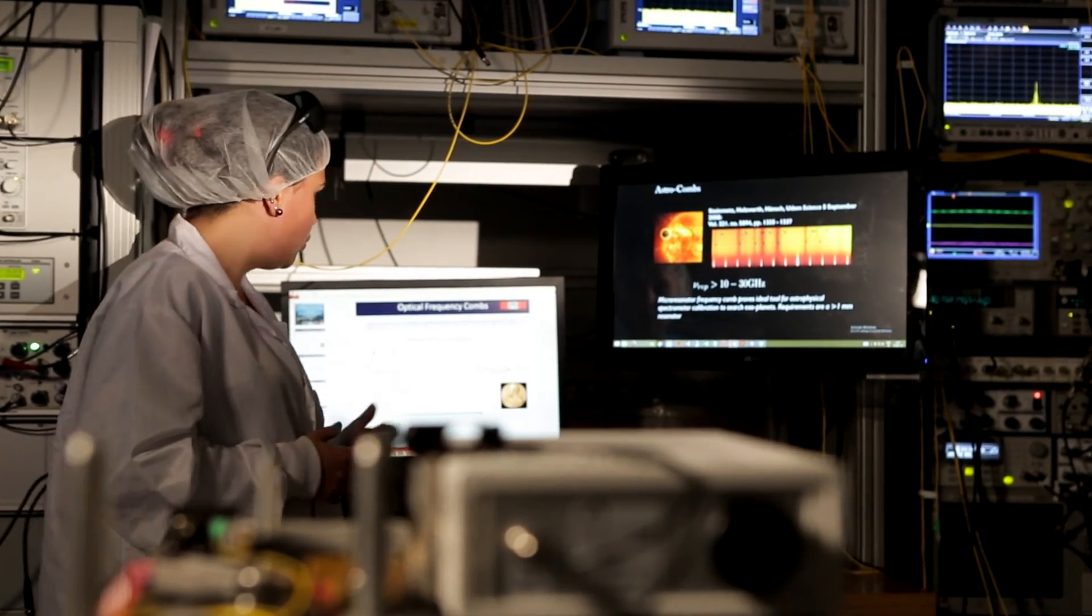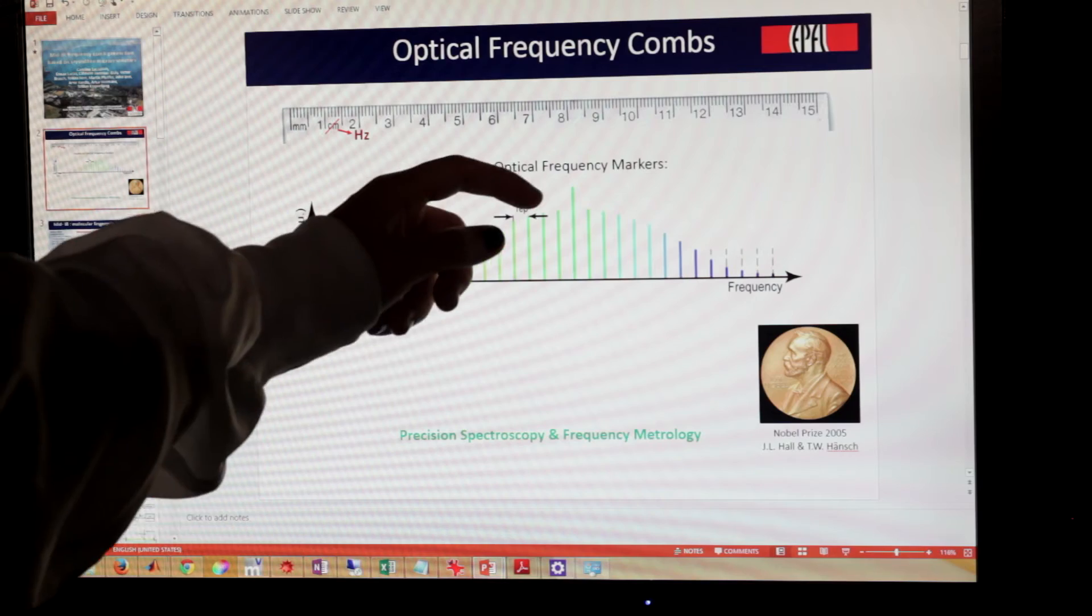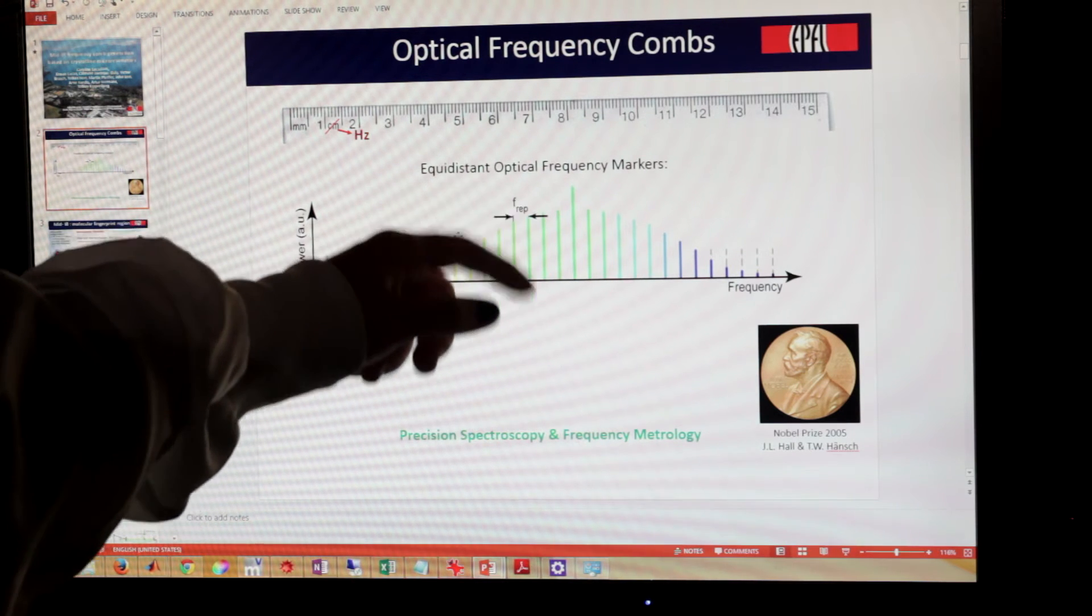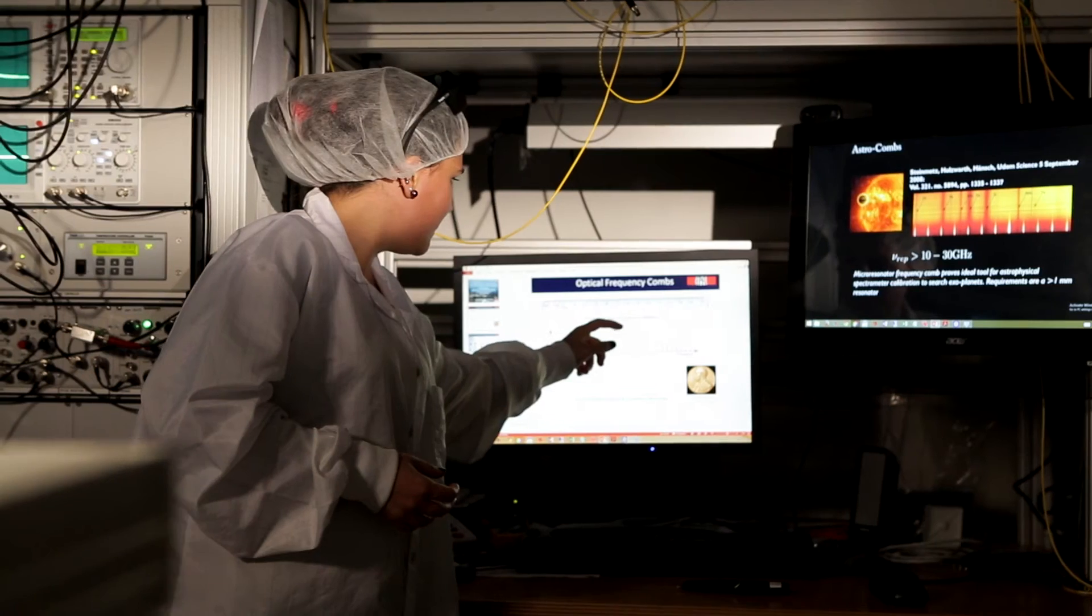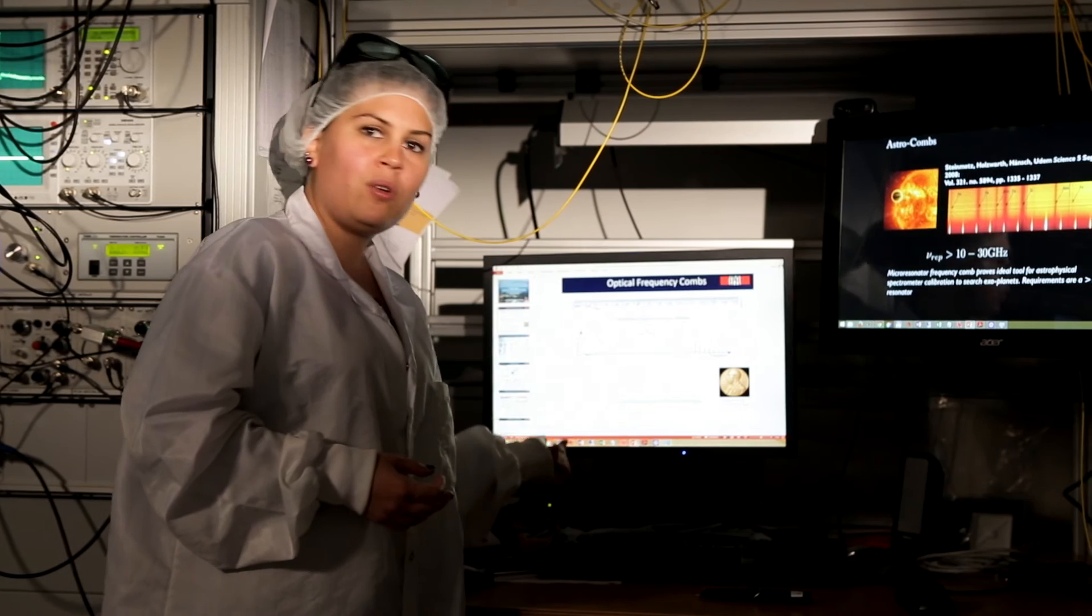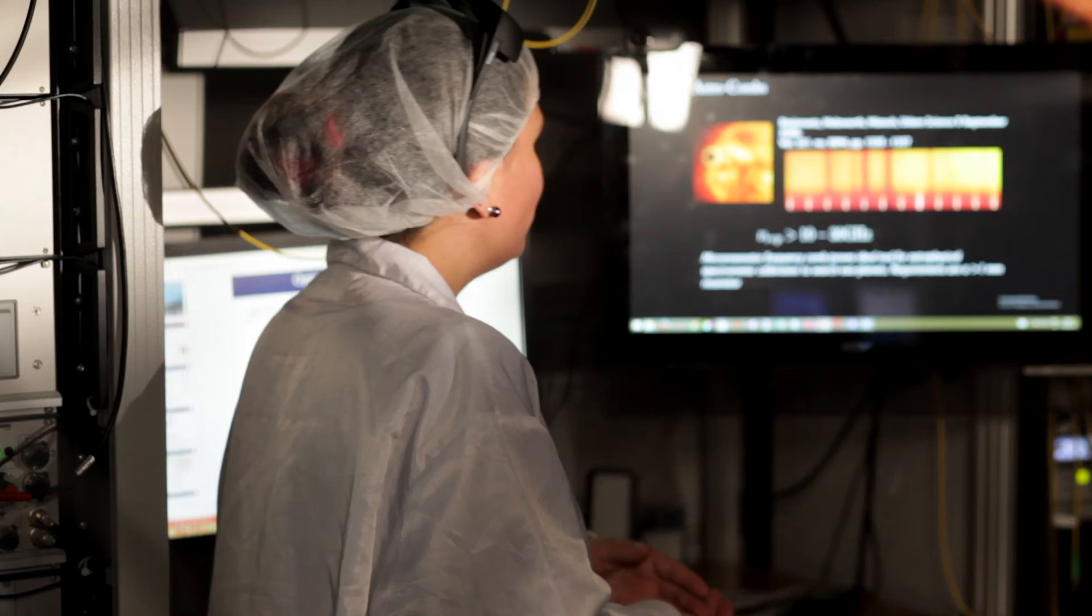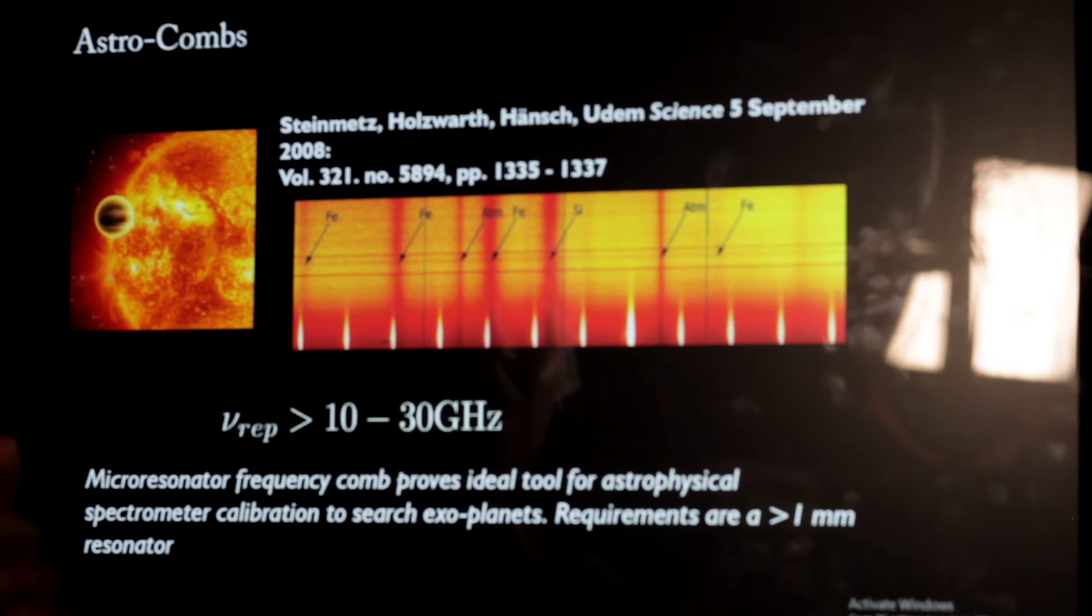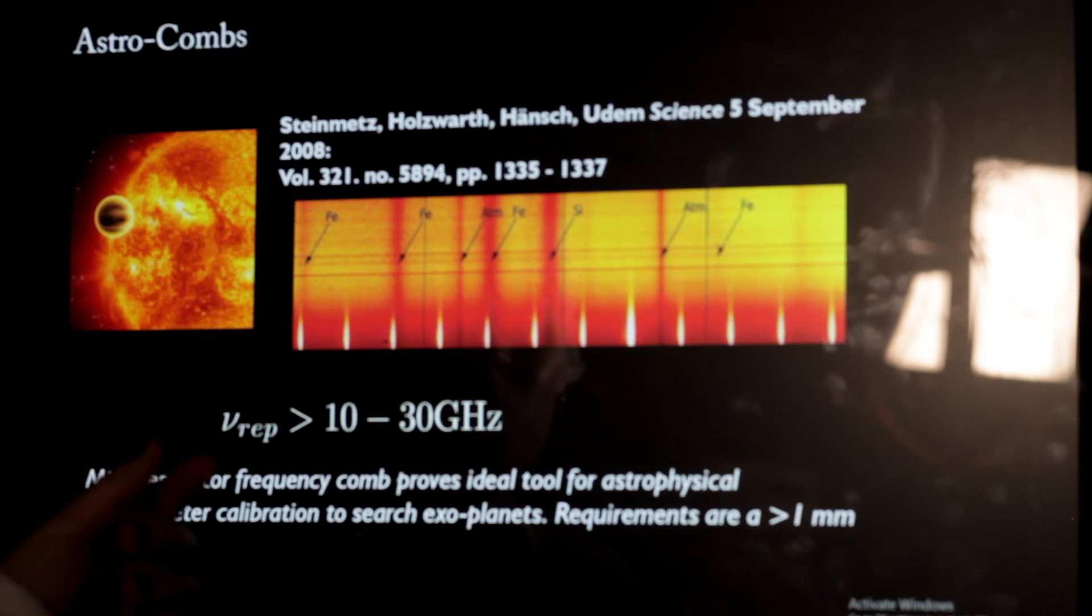A frequency comb is obtained from a laser, a color, and this color will break down in the form of teeth. Each tooth is positioned at the same distance from its neighbor, the whole forms a frequency comb. We can then use it to go and compare it with the chemical signature of the exoplanet, and to discover its presence in the universe.